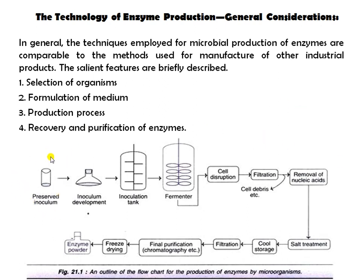To increase enzyme production, from a preserved inoculum, we subculture and develop the inoculum suitable for production. The inoculum in a suitable amount is then inoculated into a tank containing a suitable culture medium for the growth of the microorganism. Then all contents are transferred into the fermenter. After fermentation is complete, cell disruption is carried out, followed by filtration, removal of nucleic acids, salt treatment, cold storage, further filtration, final purification, and freeze-drying to obtain the enzyme in powder form.